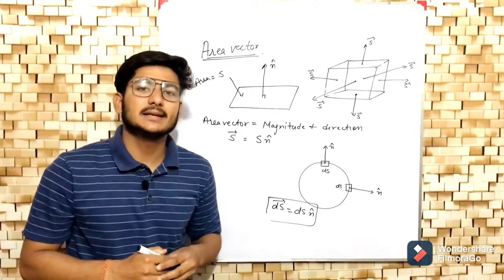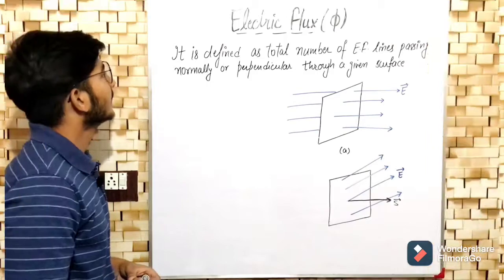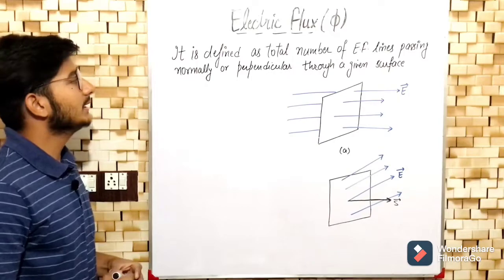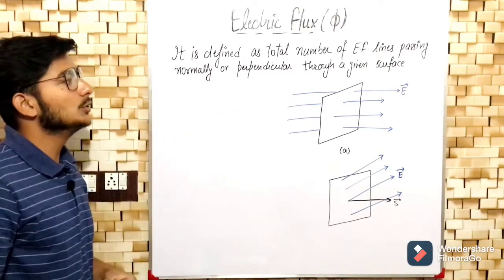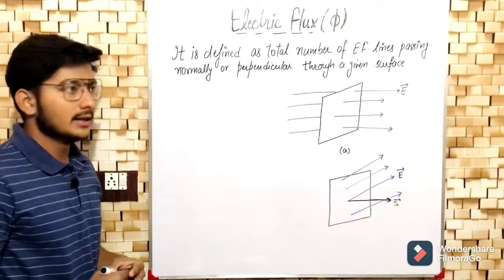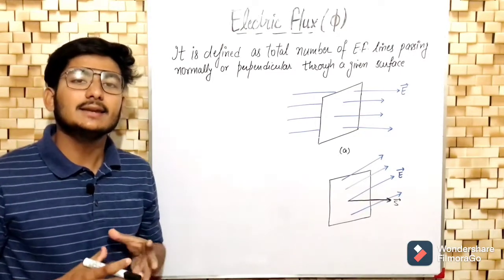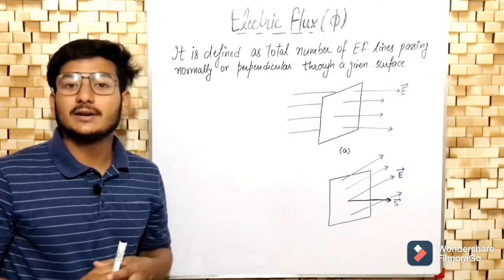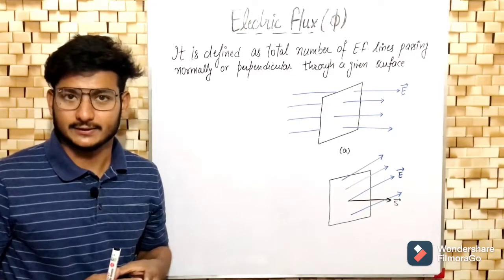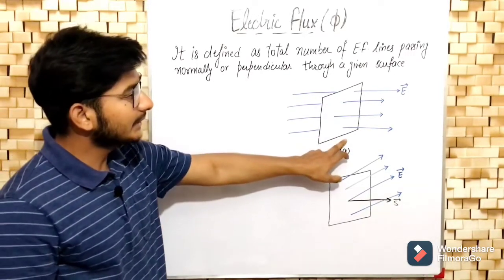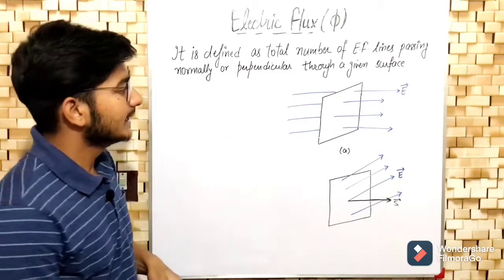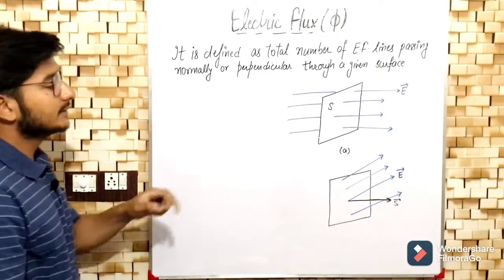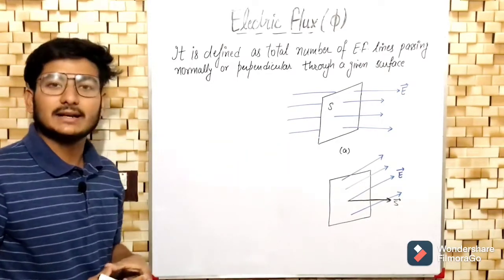The next term is electric flux. Electric flux is defined as the total number of electric field lines passing normally, or perpendicular, through a given surface — meaning how many electric field lines are passing through a surface. The condition is that the electric field lines must be perpendicular to that surface.